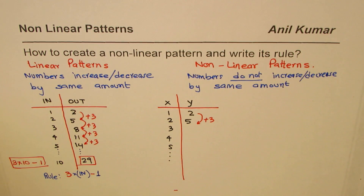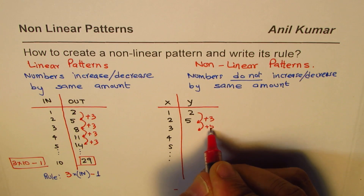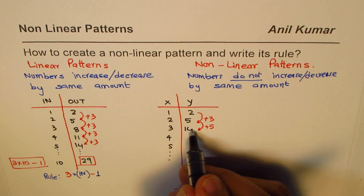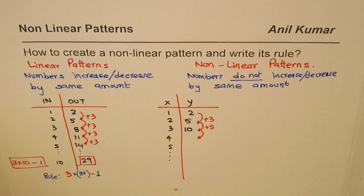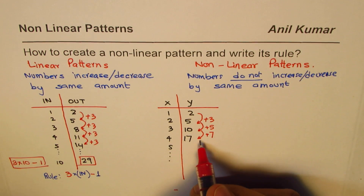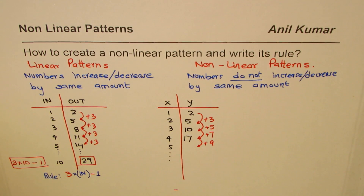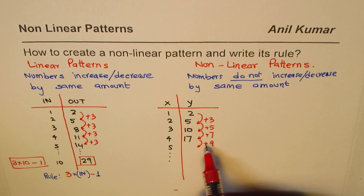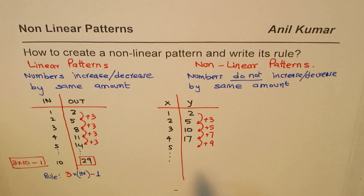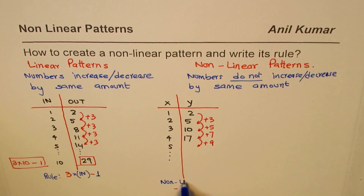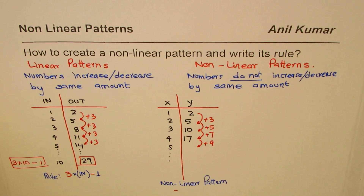But now, instead of adding three again, I add five: five plus five is ten. Then a different amount — add seven: ten plus seven is seventeen. Then add nine: seventeen plus nine is twenty-six. We are increasing by different amounts each time, so this pattern is clearly nonlinear.